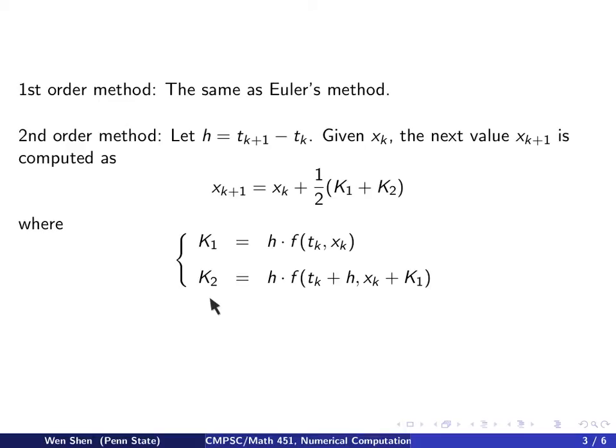And then K2 is computed as h times f. Now, not evaluated at tk, xk anymore, but at tk plus h, and an xk plus capital K1, which we have just computed earlier.